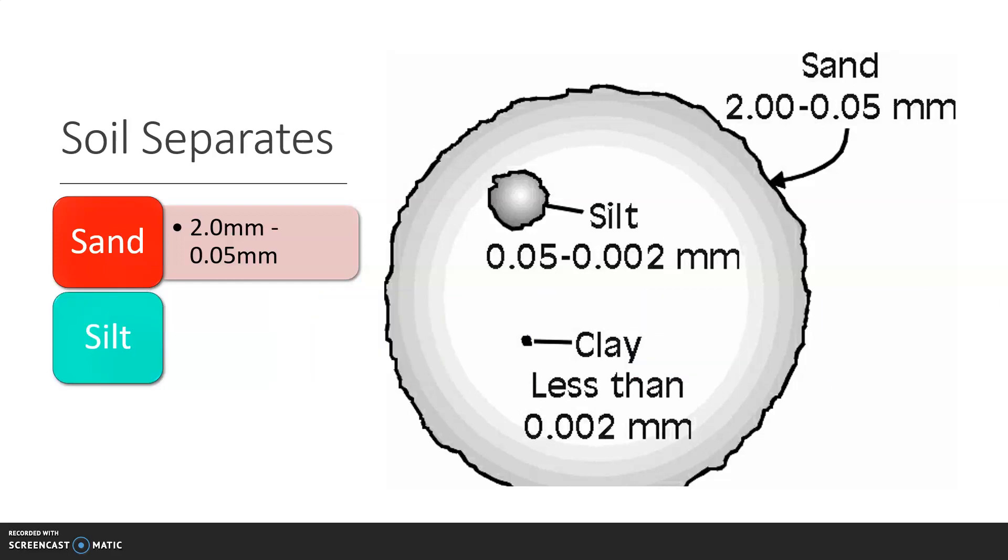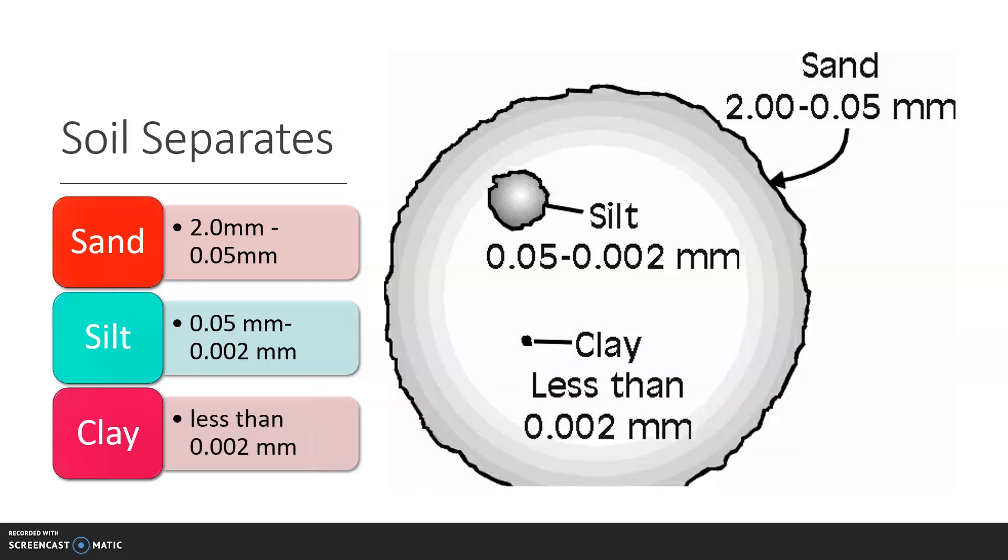Silt is the medium-sized soil separate. Silt has a diameter of 0.05 millimeters to 0.002 millimeters. Clay is the smallest soil separate. Clay has a diameter of less than 0.002 millimeters.